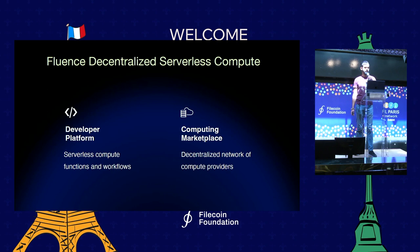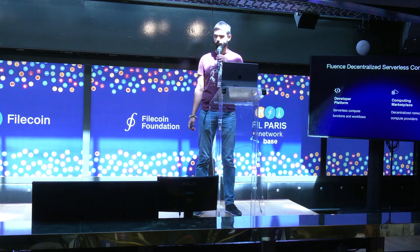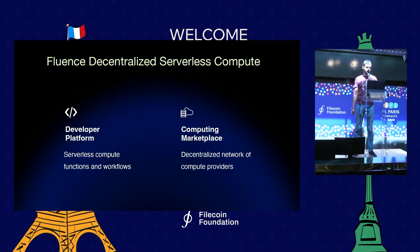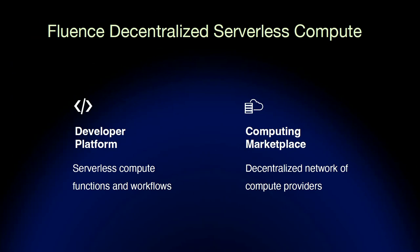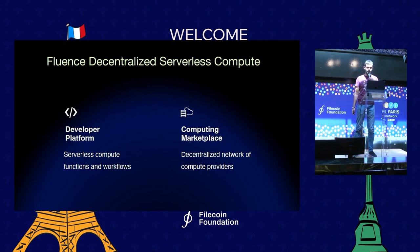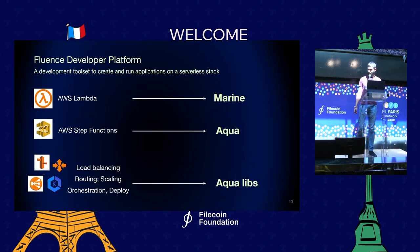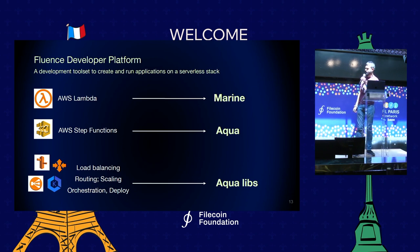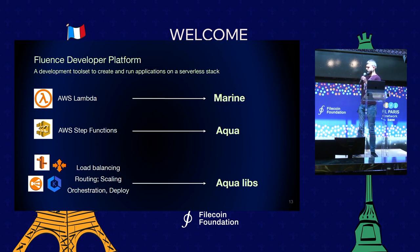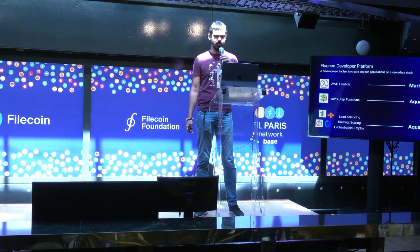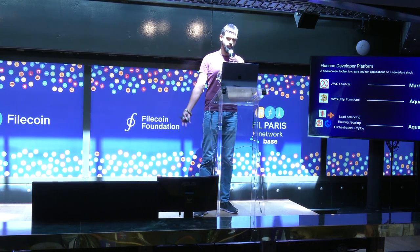We can look at Fluence decentralized serverless compute platform from two angles. It's a developer platform offering serverless compute functions and workflows. For the developers, the simplest analogy is something like AWS Lambda or Cloud Functions — we have a WebAssembly runtime for that called Marine. We have an analogy for AWS Step Functions and distributed algorithms, and that's Aqua and Fluence. The protocol itself ends at this step, and all other behaviors like load balancing, routing, scaling, and deployment are distributed algorithms that can be implemented as Aqua libraries.